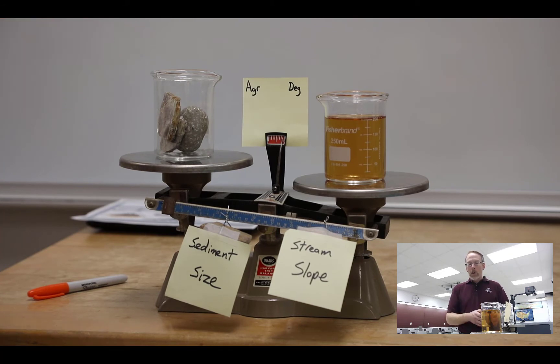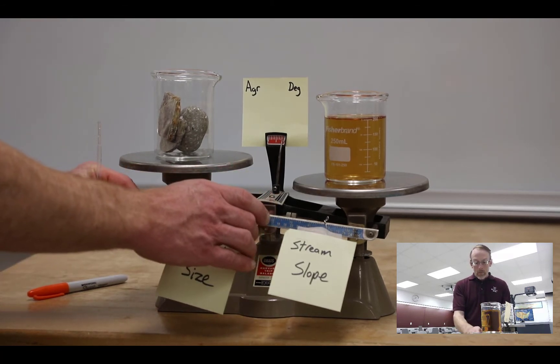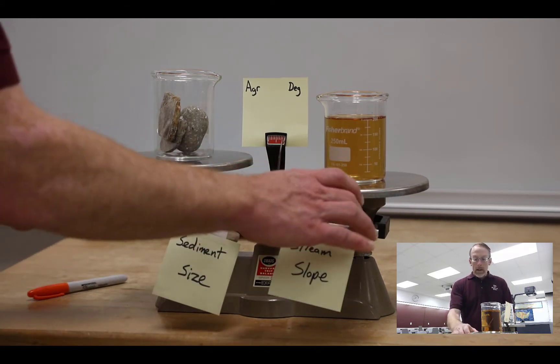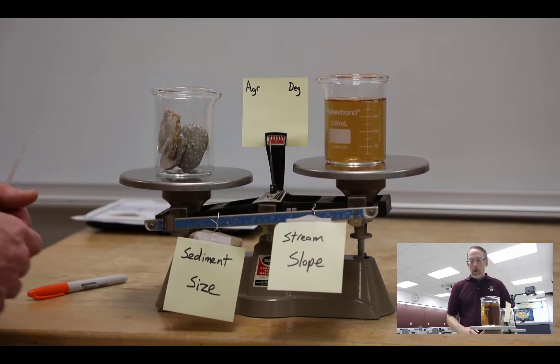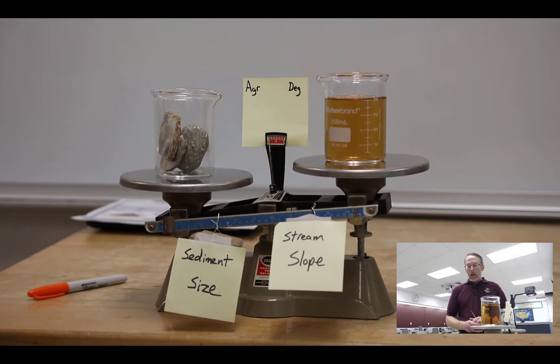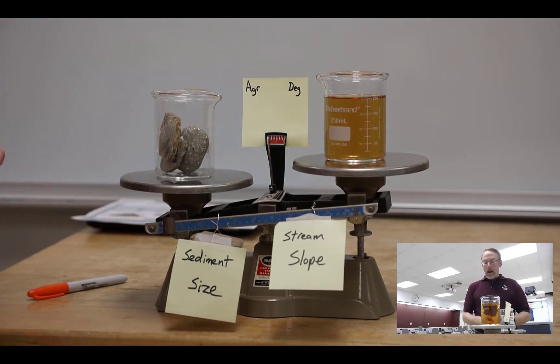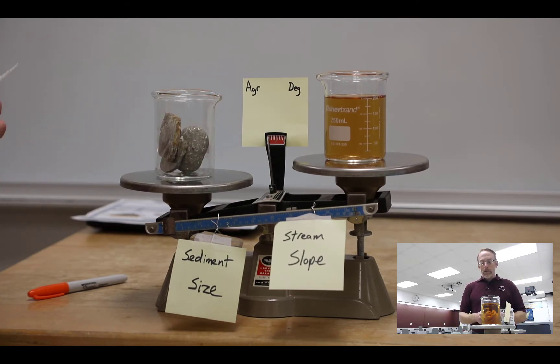On the other hand, if we decrease the stream slope—if the overall channel slope or water slope, the energy in the system is decreased—even with that smaller sediment size and the same amount of water in the system, the channel will aggrade. The floodplain will have to build up. The stream won't be able to move all the sediment that's available to it.